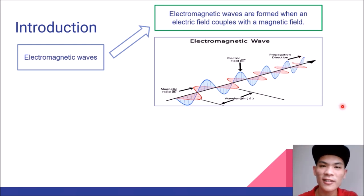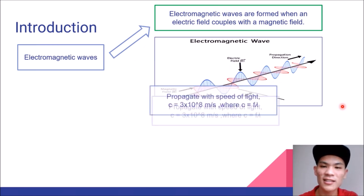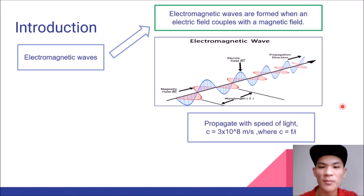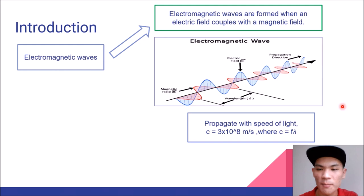How fast do you think this electromagnetic wave propagates? The answer is it propagates with the speed of light, which is 3 times 10 to the power of 8 meters per second, where c is equal to f times lambda. Here, c is the speed of light, f is the frequency, and lambda is the wavelength.